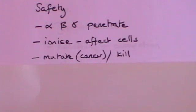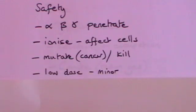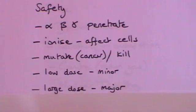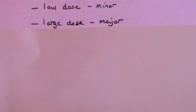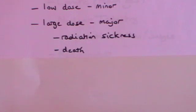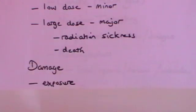If the radiation is strong enough, you can actually kill the cells completely. In a very low dose, there may only be a very minor effect, but if you have a large dose, you could be in for a major problem. You might get radiation sickness, and it can in some extreme circumstances lead to death. The damage done is largely proportional to the extent of the exposure — the more you are exposed to this radiation, the more likely there will be damage.